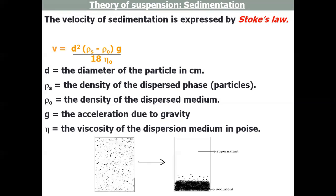If I want to decrease the rate of sedimentation so that particles will settle after a long time, the particle size should be small. Both phases—the dispersed phase and the dispersion medium—should have equal density so they can be together, and the viscosity of the dispersion medium should be high.